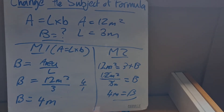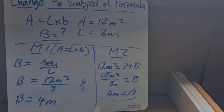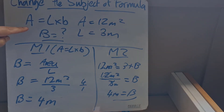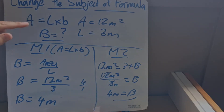So you can see we have two distinct ways of calculating the same thing, but in essence we are still using the original formula: area equals length multiplied by breadth.